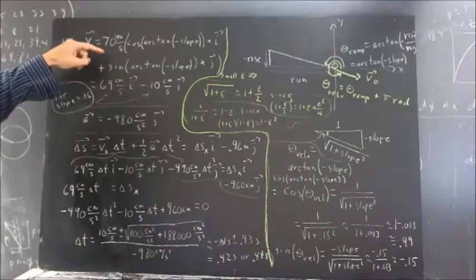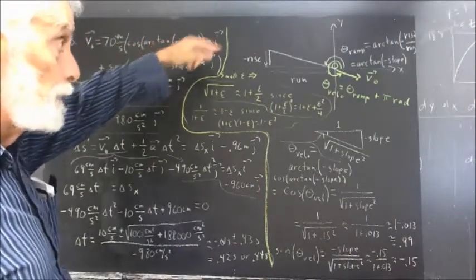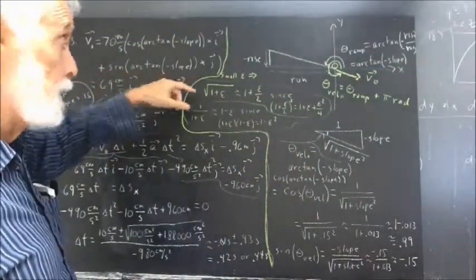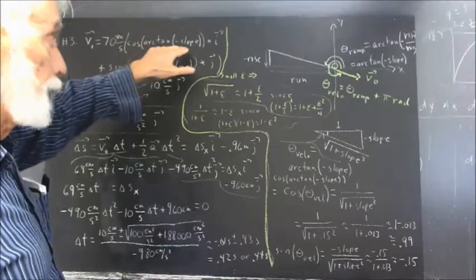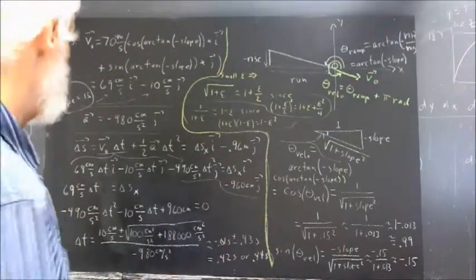So we multiply that 70 centimeters per second by the cosine of the angle, the angle we have here, plus the sine of the angle. And the angle is the arc tangent of the negative slope, for reasons that we detailed over here.